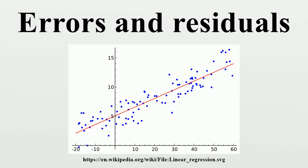Suppose there is a series of observations from a univariate distribution and we want to estimate the mean of that distribution. In this case, the errors are the deviations of the observations from the population mean, while the residuals are the deviations of the observations from the sample mean. A statistical error is the amount by which an observation differs from its expected value, the latter being based on the whole population from which the statistical unit was chosen randomly. For example, if the mean height in a population of 21-year-old men is 1.75 meters, and one randomly chosen man is 1.80 meters tall, then their error is 0.05 meters.